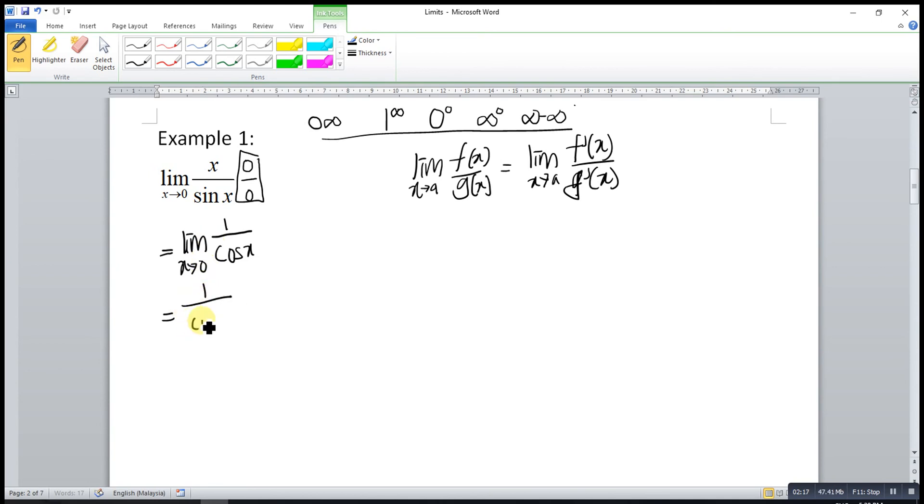So 1 over cos 0, this will give us 1 because cos 0 is 1. So 1 over 1 is 1.